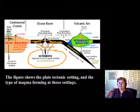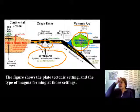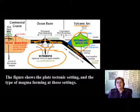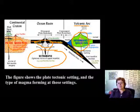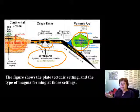When you have convergent plate boundaries such as oceanic-oceanic like Japan, you have partial melting of the mafic magma which produces intermediate magma around the volcanic arcs. If you have oceanic-continental, on the other hand, that's going to make intermediate to felsic magma. Most of the time the continental crust is going to be very felsic.